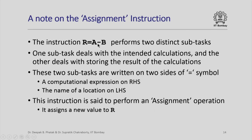r = a − b is an assignment instruction which performs two distinct subtasks. One subtask deals with the calculations — finding the difference between a and b — which is written on the right-hand side of the equals symbol. The other subtask is to put the calculated value in the desired location. Consider the equals symbol: the computational expression is written on the right-hand side, and the name of the destination location is written on the left-hand side. This instruction is said to perform an assignment operation.